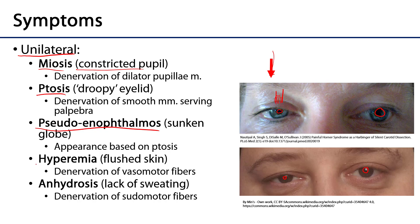The next symptom is hyperemia — a flushed appearance to the skin. This occurs because the vasomotor fibers are denervated. Without the tone coming from the fibers to the walls of the blood vessels, the vessel walls relax and as a result more blood flows through them. Near the surface of the skin this gives a flushed appearance — hence hyperemia, meaning more blood, which leads to flushed skin.